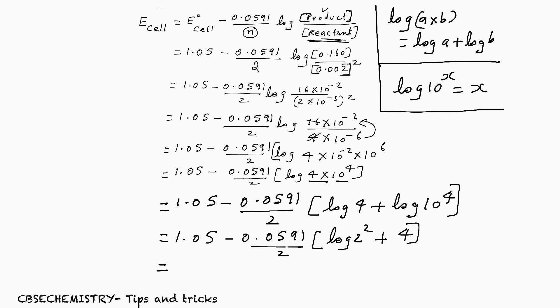Next step. 1.05 minus 0.0591 by 2. Again, one more rule is there: log X^A is A log X. Here, log 2^2 becomes 2 log 2 plus 4. Hope all of you understand.